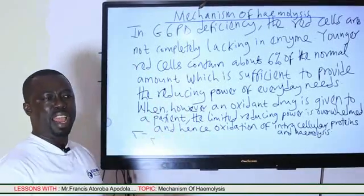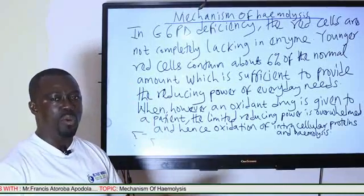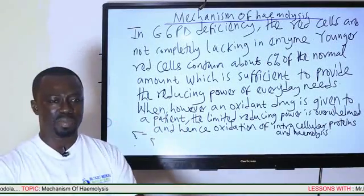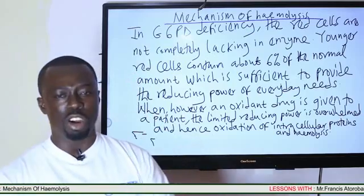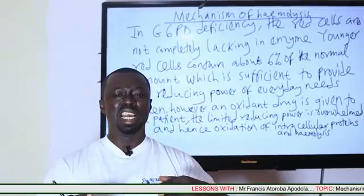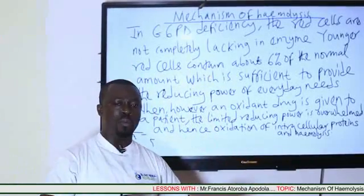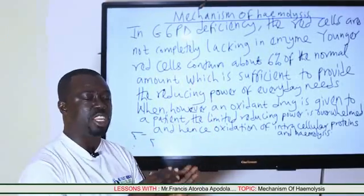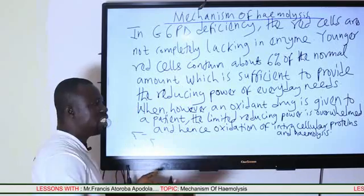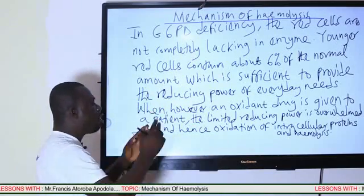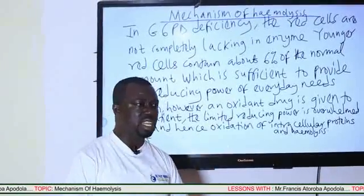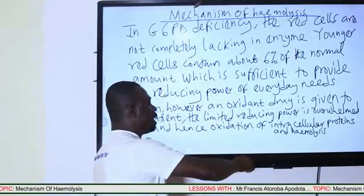However, this protection is lost when the GCSPD-deficient individual is exposed to oxidants, such as drugs like sulfadoxine-pyrimethamine or primaquine. The oxidant stress becomes so much that it overwhelms the everyday normal reducing power coming from the six percent GCSPD activity in young red cells known as reticulocytes. When the cells are exposed to oxidant drugs, the oxidative stress becomes so much that the cells are unable to withstand it. The end result is oxidation of intracellular proteins, lipids, and other molecules, resulting in hemolysis.